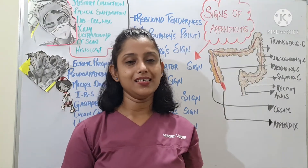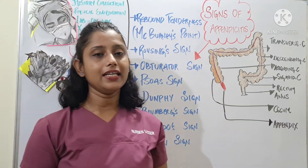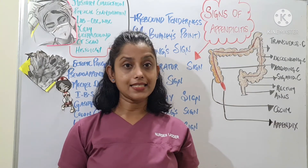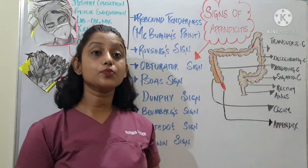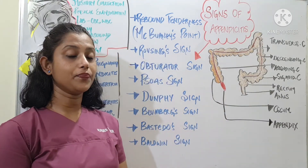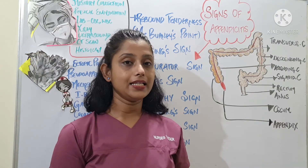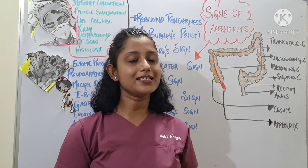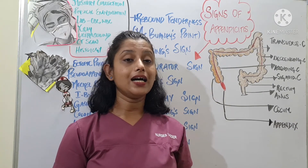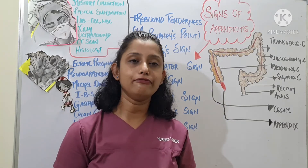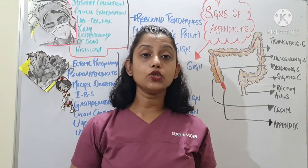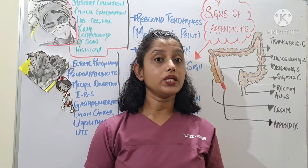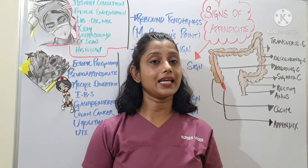Next is Bastardo's sign, which is pain felt in the right iliac fossa, indicating the presence of a chronic appendix. Baldwin's sign is pain felt in the flank region when the right hip is flexed, indicating a retrocecal appendix which is inflamed. Other than these signs, there could be abdominal distension. When there is abdominal distension, we need to be extremely careful because it may indicate a rupture of the appendix.